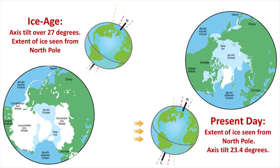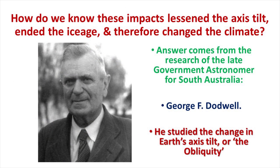The evidence indicates the Ice Age was brought about by a high axis tilt over 27 degrees, caused by a series of eight asteroid impacts from objects over 10 miles across. Many hit in water, which aided the intense impact winter that led to the Ice Age. The only way the Ice Age could have ended was if the axis tilt was lessened by a later series of smaller impacts that caused the axis tilt to become the 23.4 degrees we have today. How do we know these impacts lessened the axis tilt, ended the Ice Age and so changed the climate?